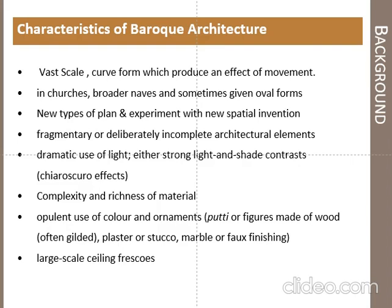Fragmentary or deliberately incomplete architectural elements came from the Mannerist style. Dramatic use of light — strong light and shade contrast — creates an effect called the chiaroscuro effect in the building. Complexity and richness of materials is seen in these buildings, which are human-scale but very minutely and beautifully decorated.